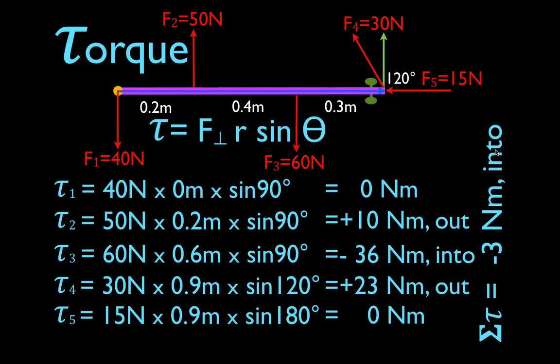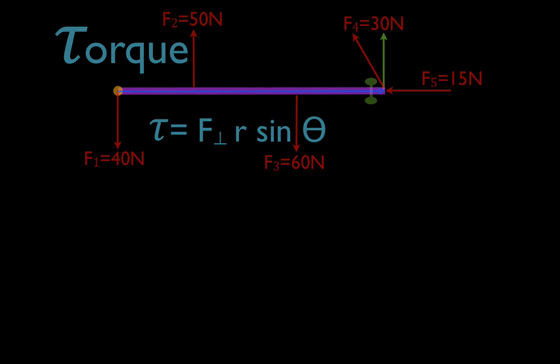So there you go — I think that was pretty straightforward. We went through each of those five forces, did the same thing for each one: force times lever arm times sine of the angle, got the individual torques, summed them up, and got the net torque. Thank you very much for watching. If you found that helpful, please subscribe to my channel to get all my physics, chemistry, and math videos, give me a thumbs up, and leave a positive comment below. We'll see you in the next video.